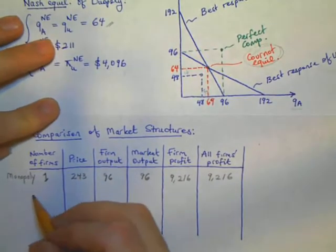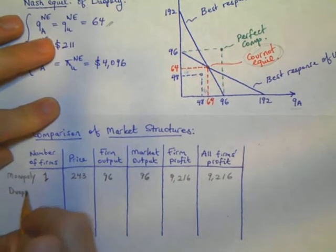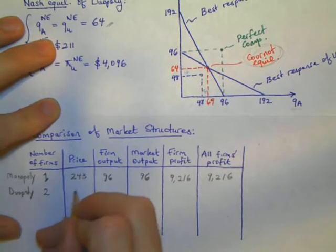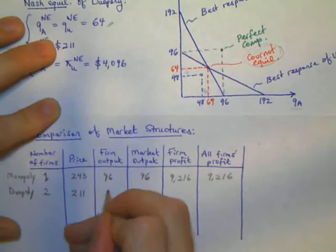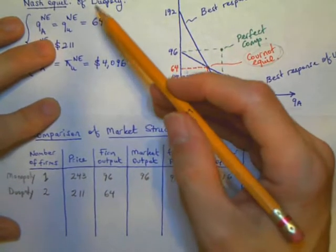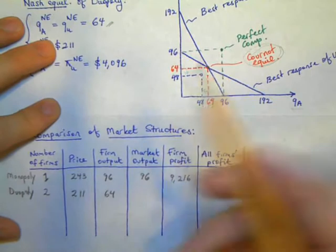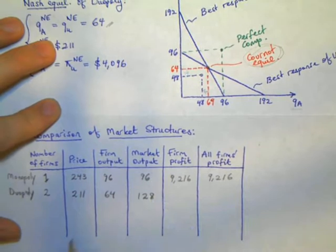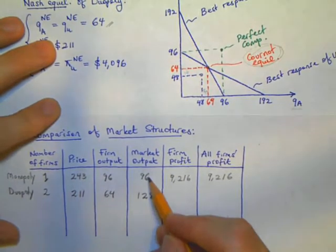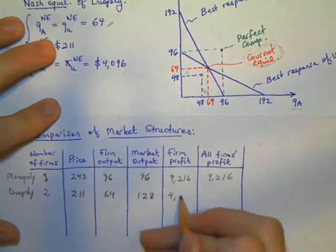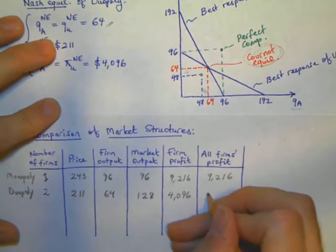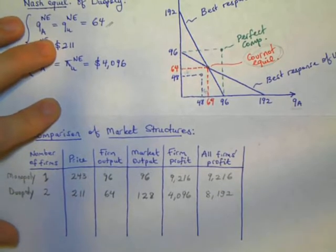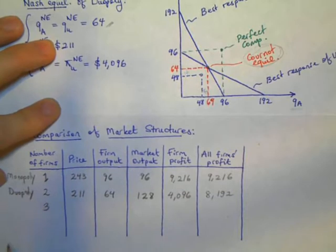Now in the case of a duopoly, we have two firms competing, and the market price drops significantly to $211, and each firm produces 64 units, as we mentioned early on. So the market output is 2 times 64, which is 128, significantly higher than the monopolist would produce. Each firm will earn $4,096 of profits, which would make a combined profit of $8,192.